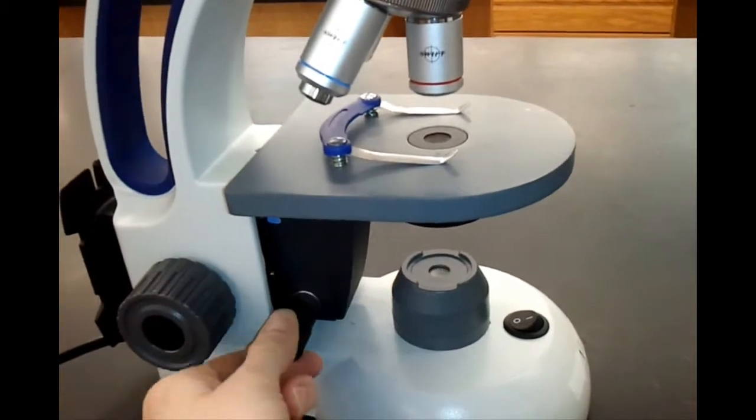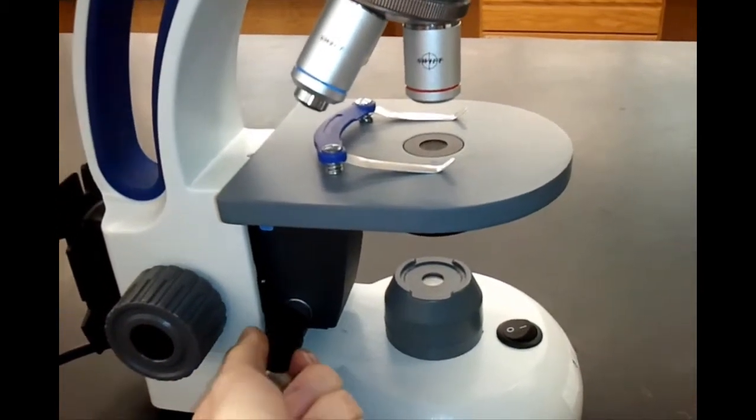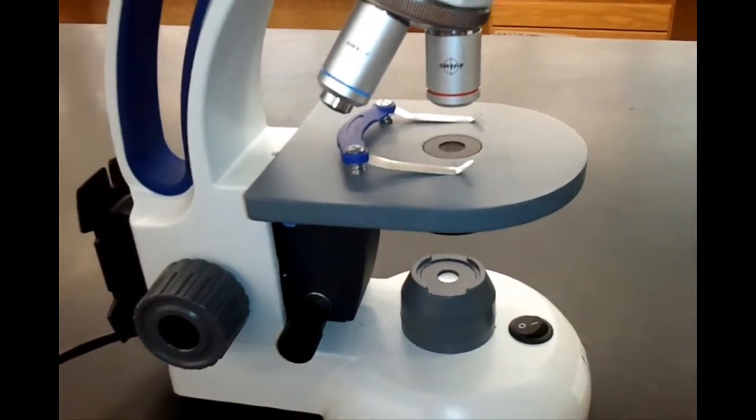The smaller knob is the fine adjustment knob. This knob is used to completely focus the image.